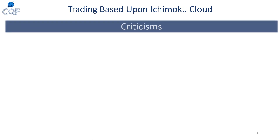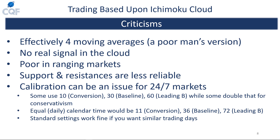What are some criticisms of the Ichimoku? First, it's effectively four moving averages, but really weak ones because they use the high and the low rather than a true average. These days we have much more computing power to calculate true moving averages, whether simple or exponential. The Ichimoku doesn't give a good signal when price is in the cloud, and it's pretty poor in ranging markets. As mentioned, I'm not a big fan of the supports and resistances it provides — I prefer well-known horizontal lines, moving averages, or round numbers.